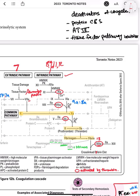The intrinsic pathway starts with factor 12. Factor 12 gets activated by high molecular weight kininogen and pre-kallikrein, which indicates that secondary hemostasis has been initiated. High molecular weight kininogen and pre-kallikrein activate factor 12 to factor 12A. Then factor 12A, with the help of high molecular weight kininogen, activates factor 11, which then activates factor 9. Factor 9 needs factor 8 as a cofactor to activate factor 10.